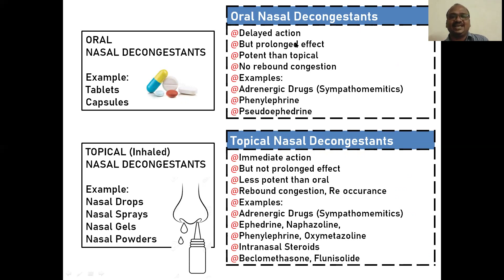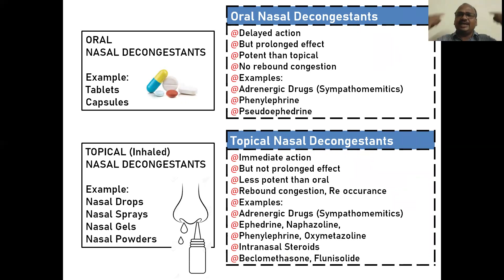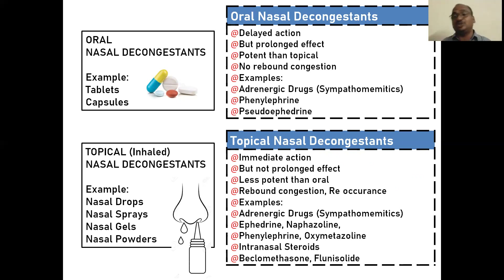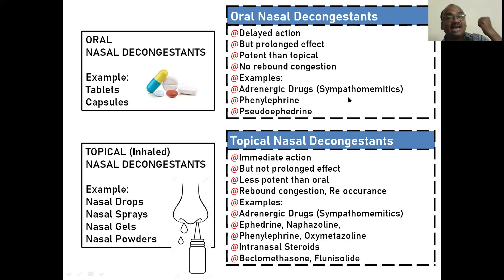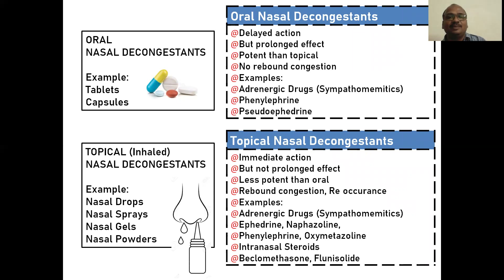Oral nasal decongestants have a delayed action because the tablet must be absorbed into systemic circulation and then reach the nose before showing action. However, they have a prolonged effect lasting for days and are very potent — more powerful than topical nasal decongestants — with no rebound effect. Examples include adrenergic drugs such as phenylephrine — you can remember phenyl as the phenyl we use to clean floors.